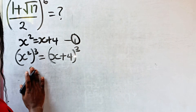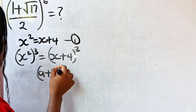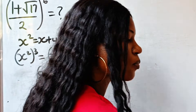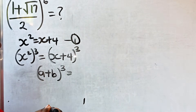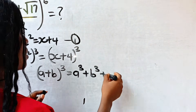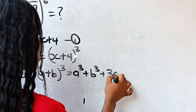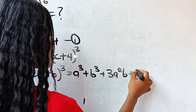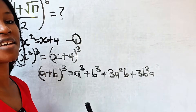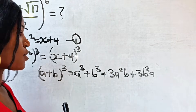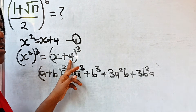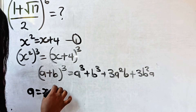Now, (a + b)³ = a³ + b³ + 3a²b + 3b²a. In this case, our a is x and our b is 4. So we have a = x and b = 4.